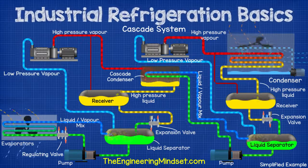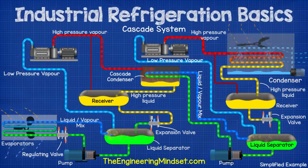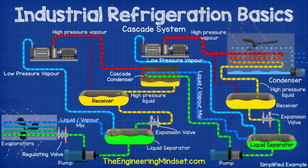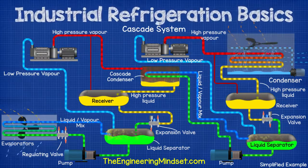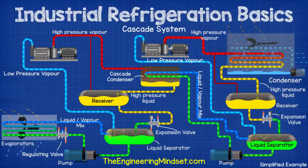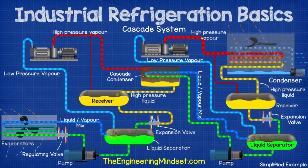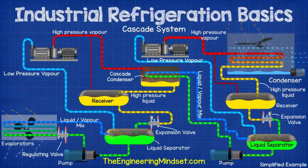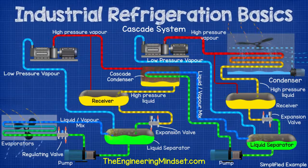The two refrigerants can be the same or they can be different and optimized for each circuit. For example, we could use ammonia for the high temperature side and CO2 for the low temperature side. This would mean that less ammonia is used and the system would be more efficient compared to a two-stage ammonia-only system.